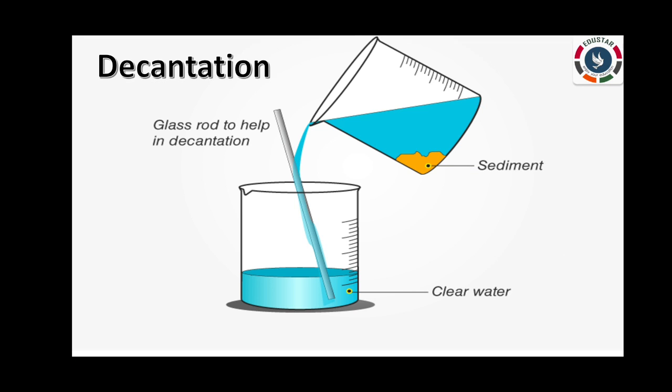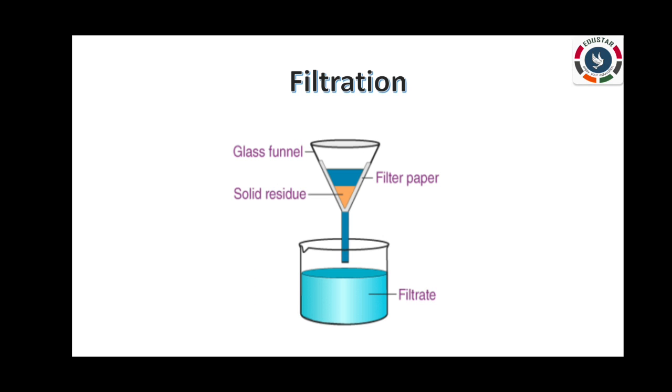So we can use the filtration method. In this process, water is passed through a filter paper. Filter paper allows water to flow through it but not impurities. The impurities are left behind on the filter paper and clean water is collected in a container below. Decantated water can also be filtered to remove impurities.